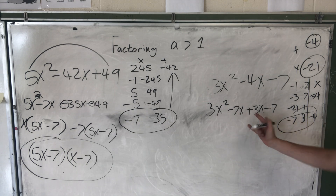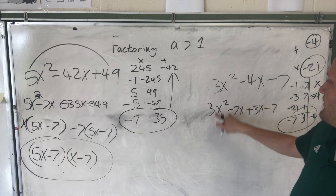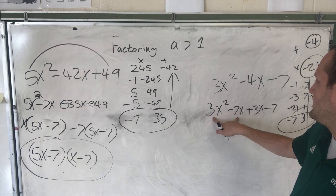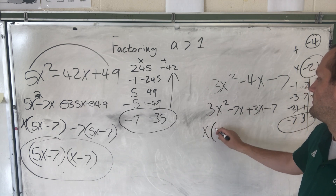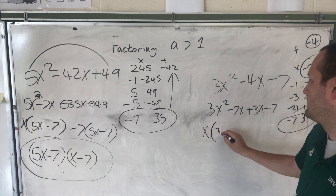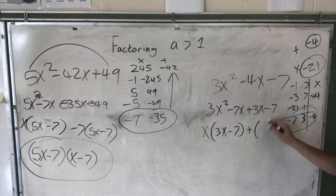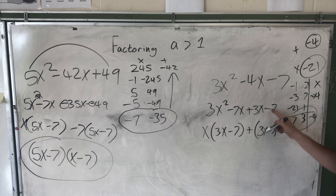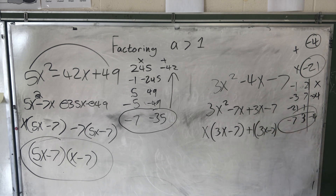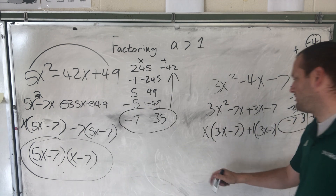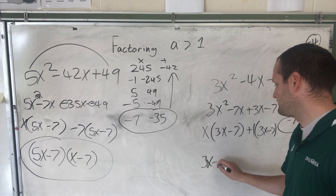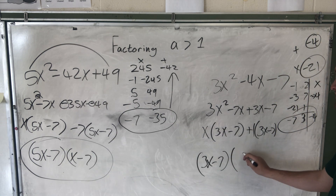You could have done those backwards — it doesn't matter. From the first group, factor out x: x(3x minus 7). From the second group, there's nothing to factor out beyond 1, so it stays as 1(3x minus 7). They're the same! There always has to be a number there, even if it is 1. So factor out (3x minus 7): the final answer is (3x minus 7)(x plus 1).